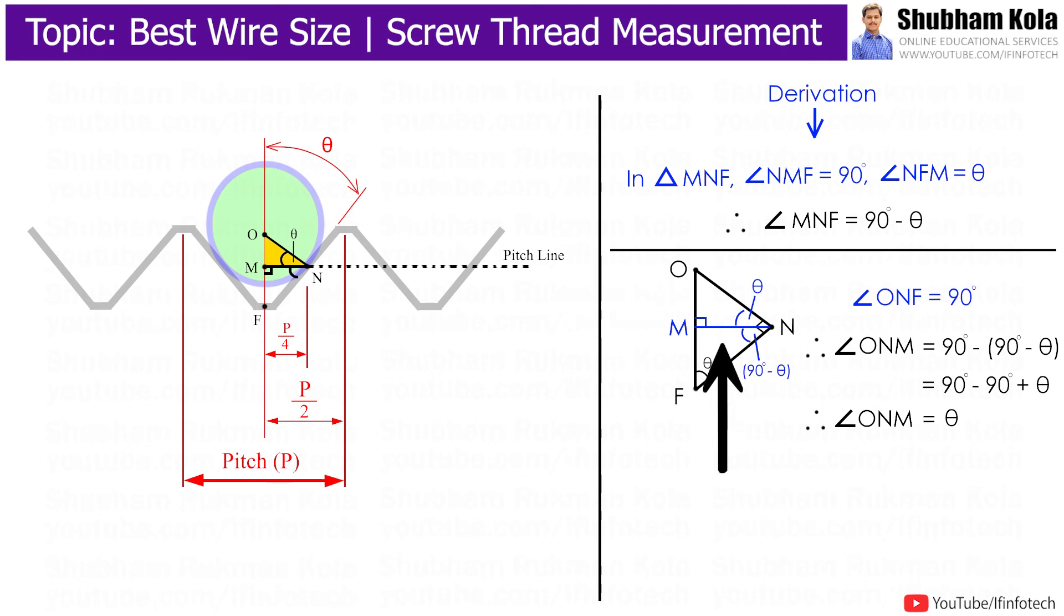Here distance OM is perpendicular to MN, so this angle is 90 degrees, then the angle NOM is equal to 90 minus theta.